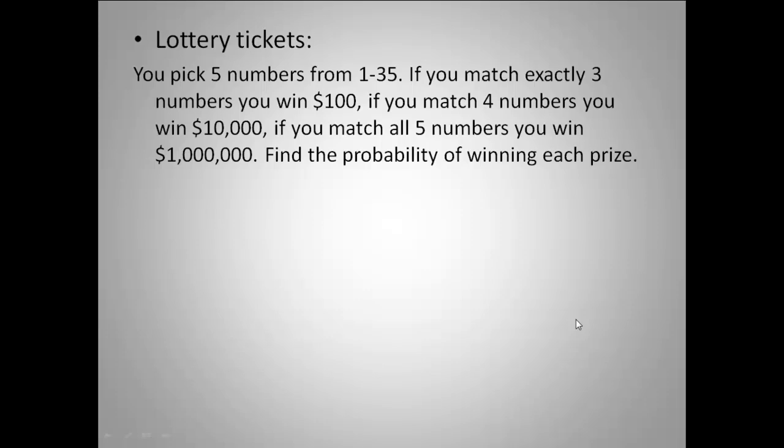Alright, so here's our last problem. For a lottery ticket, you pick five numbers from 1 through 35. If you match exactly three numbers, you win $100. If you match four numbers, you win $10,000. If you match all five numbers, you win a million. Find the probability of winning each prize.